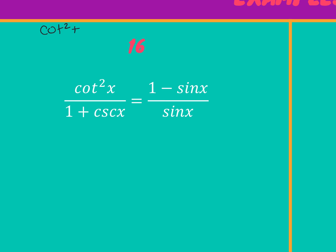Cotangent squared plus one equals cosecant squared — try changing the top since the top is squared. Would you do cosecant squared minus one? Yep.